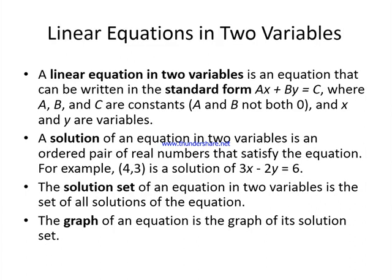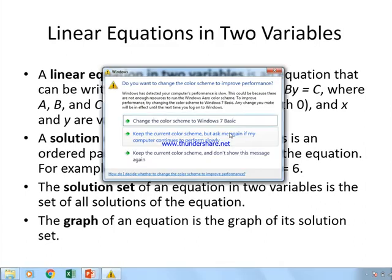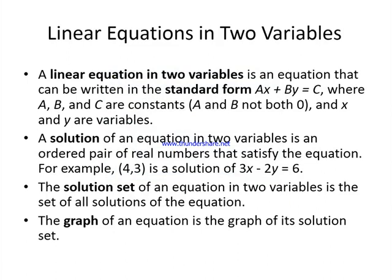If we put x equal to 4 and y equal to 3 in the equation 3x minus 2y equals 6, this equation is satisfied, so we say that the ordered pair 4, 3 is the solution set of this equation. The solution set of an equation in two variables is the set of all solutions, and the graph of an equation is the graph of its solution set. With the help of the solution set, we can draw the line in the Cartesian plane, which is called the graph of the line.